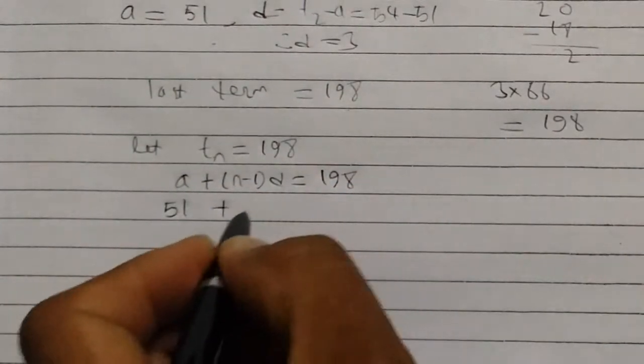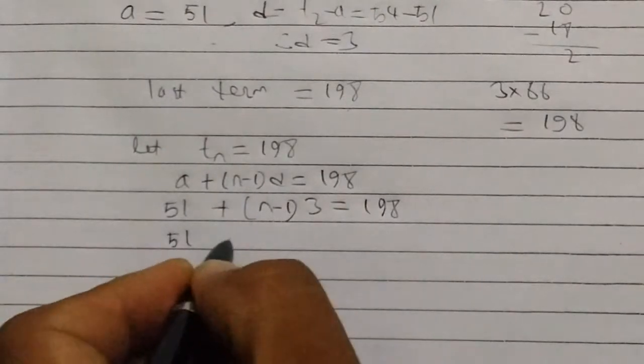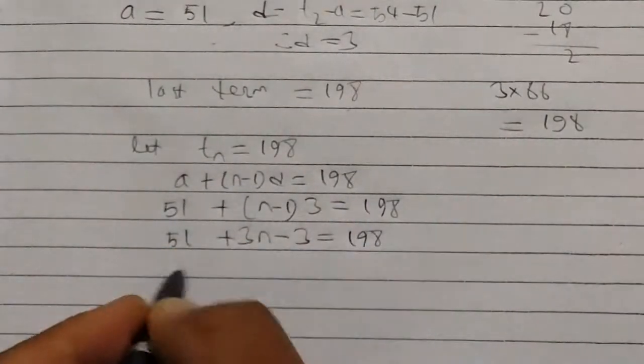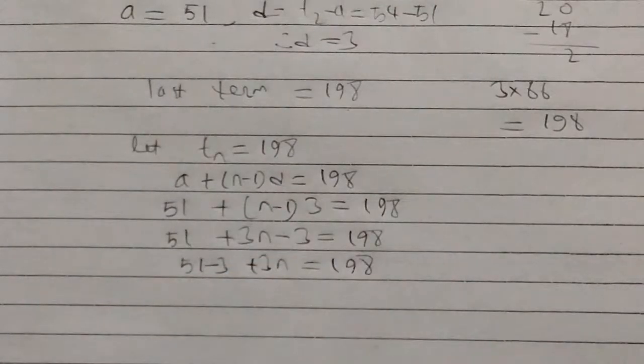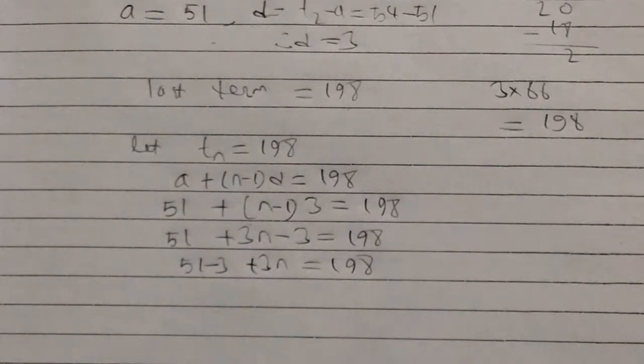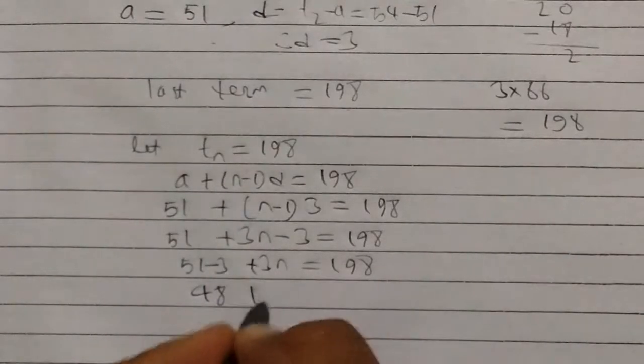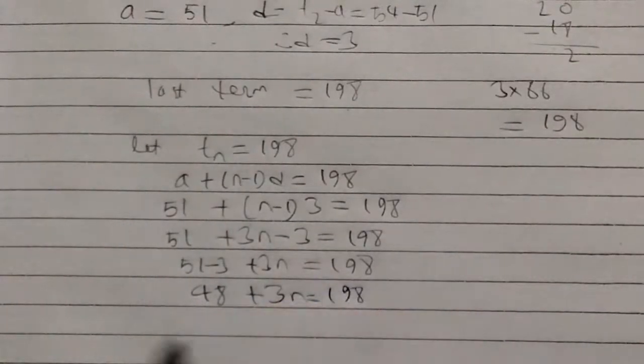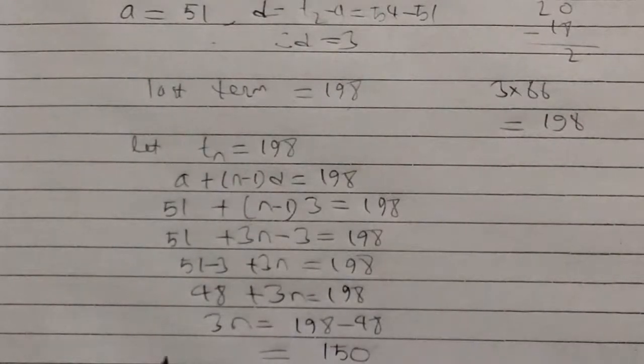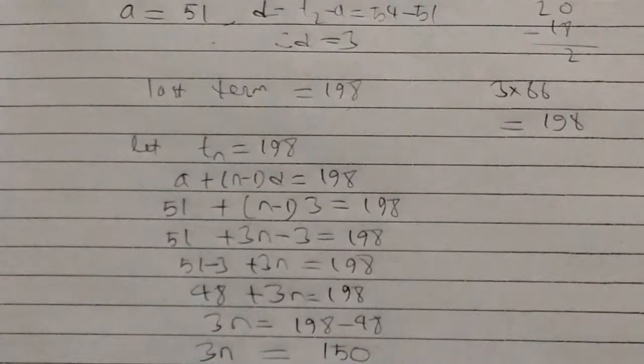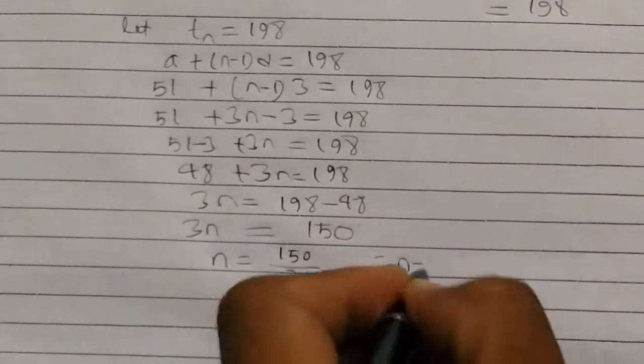a plus (n minus 1) times d equal to 198. First term is 51, so 51 plus (n minus 1) times 3 equals 198. 51 plus 3n minus 3 equals 198. 48 plus 3n equals 198. 3n equals 198 minus 48, which is 150. Therefore n equals 150 divided by 3, so n equals 50.